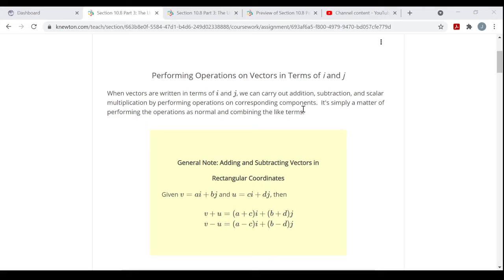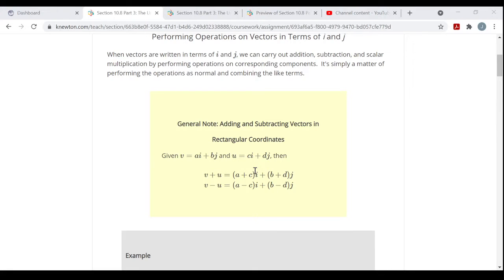Meaning stick i's with i's and j's with j's. If you're multiplying by a scalar, you just multiply both components, the i component and the j component by that same scalar. It's simply a matter of performing the operations as normal and combining the like terms.